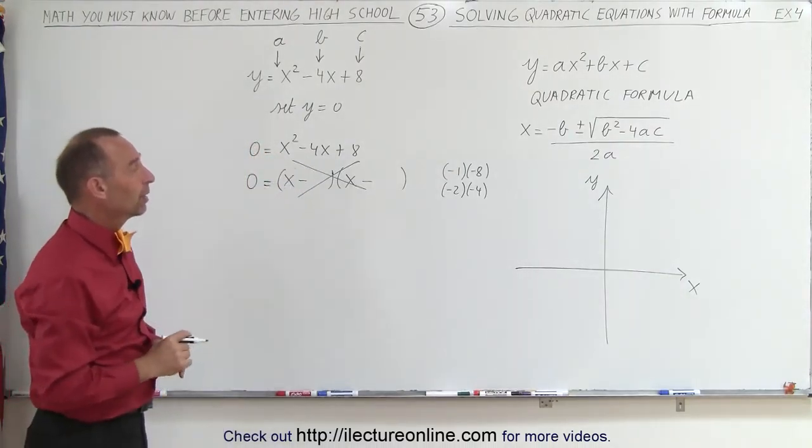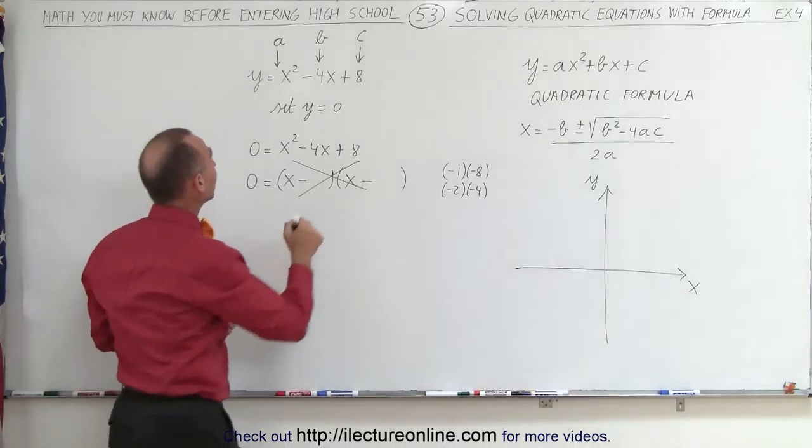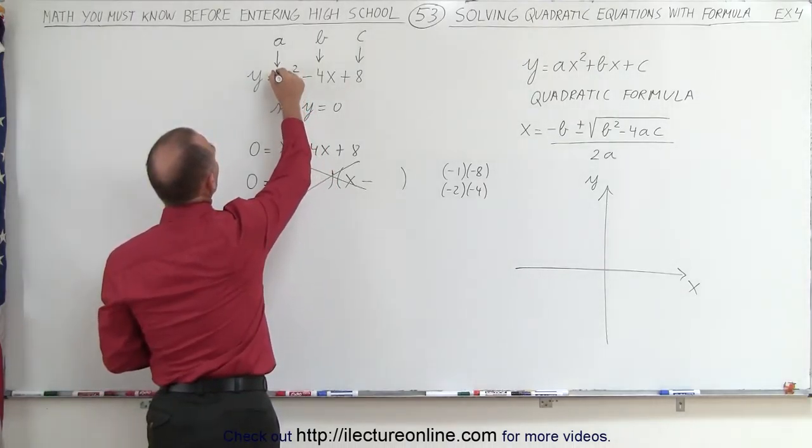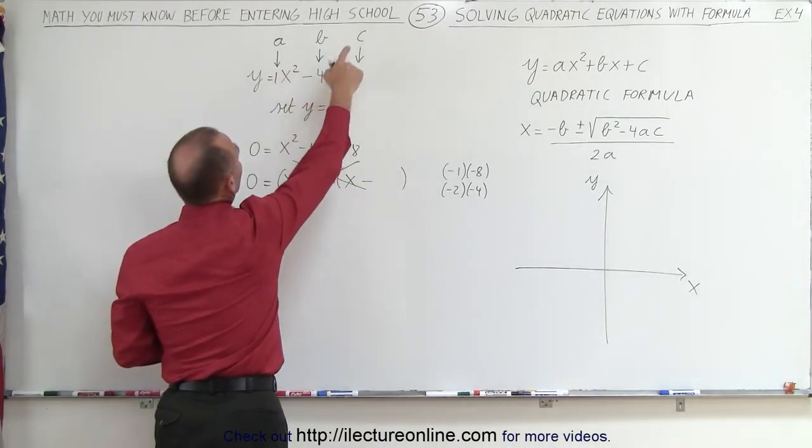So I'm going to use the quadratic formula instead, realizing again that a is positive 1, b is a negative 4, and c is an 8.